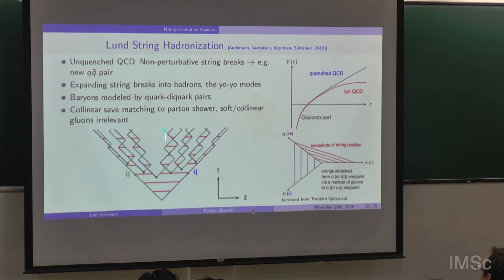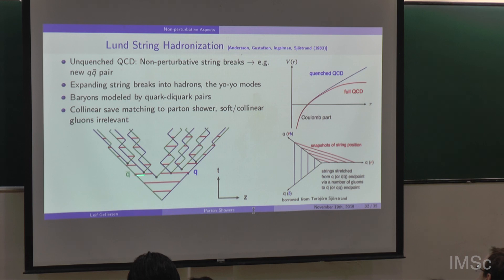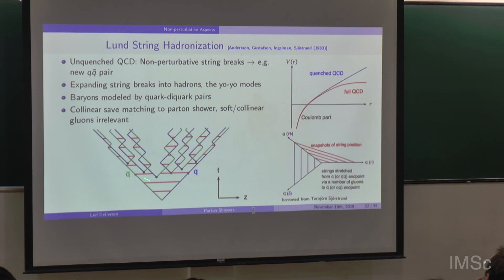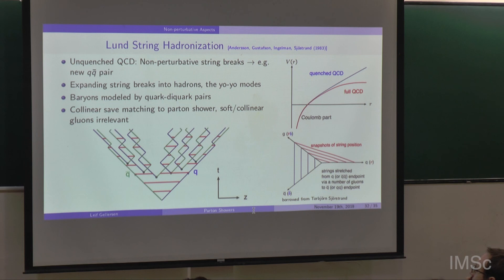In the Lund model, a qq̄ pair with opposite color charges moving apart along ±z traces light cones in the z-t plane. At some point the string configuration has enough energy to form new quark-antiquark pairs, producing mesons and baryons. Strings are stretched between quarks and anti-quarks with gluons sitting on the string — gluons carry two color charges. This hadronization model is actually infrared safe because emissions of collinear and soft gluons do not affect the string kinematics.